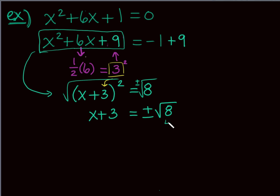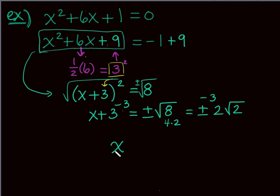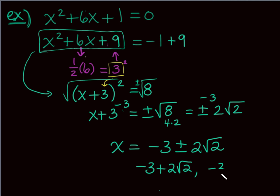So my two solutions are -3 + 2√2 and -3 - 2√2. These are irrational solutions, but that's fine — graphically this parabola has two real x-intercepts. You can approximate these in a calculator. If you use the quadratic formula, you'll get the same answer. Completing the square is important even though the formula exists.